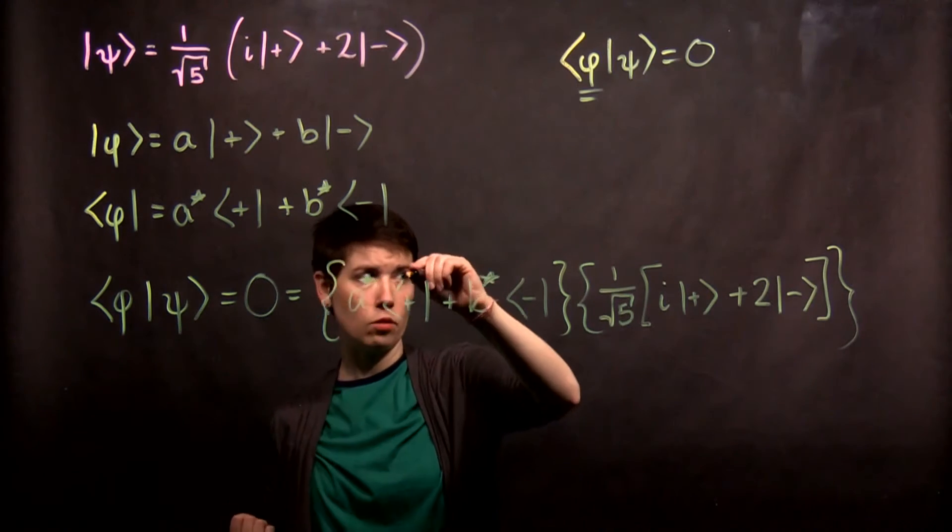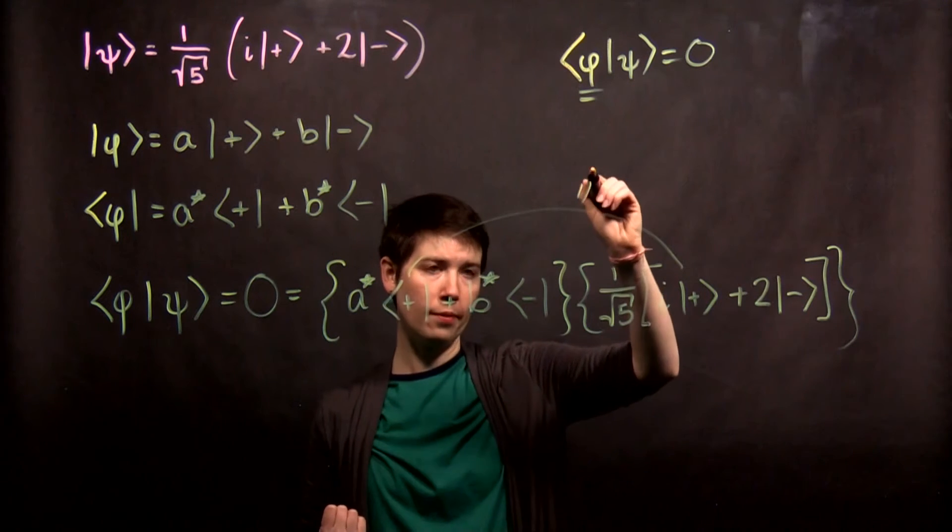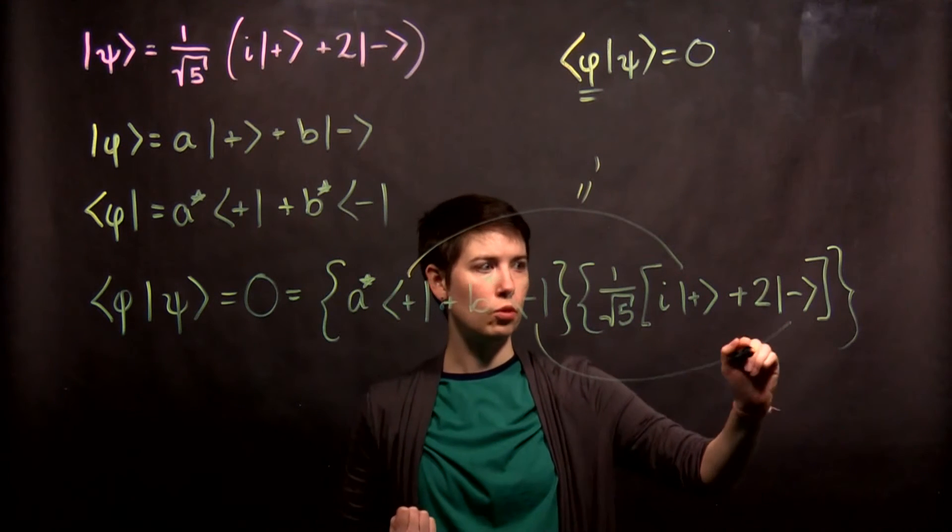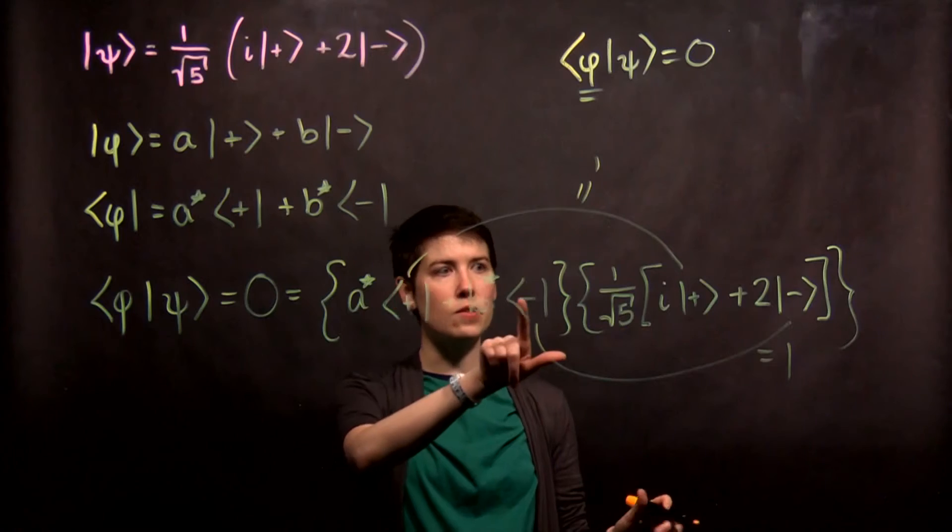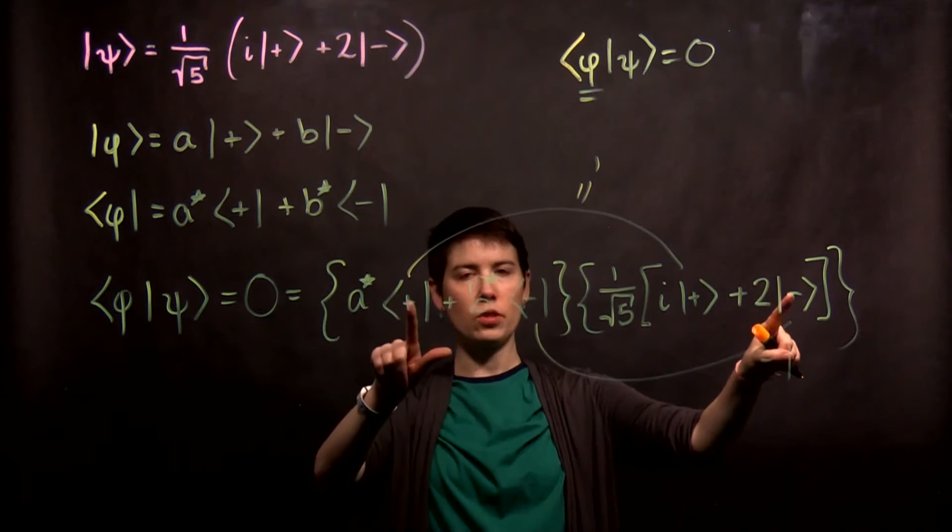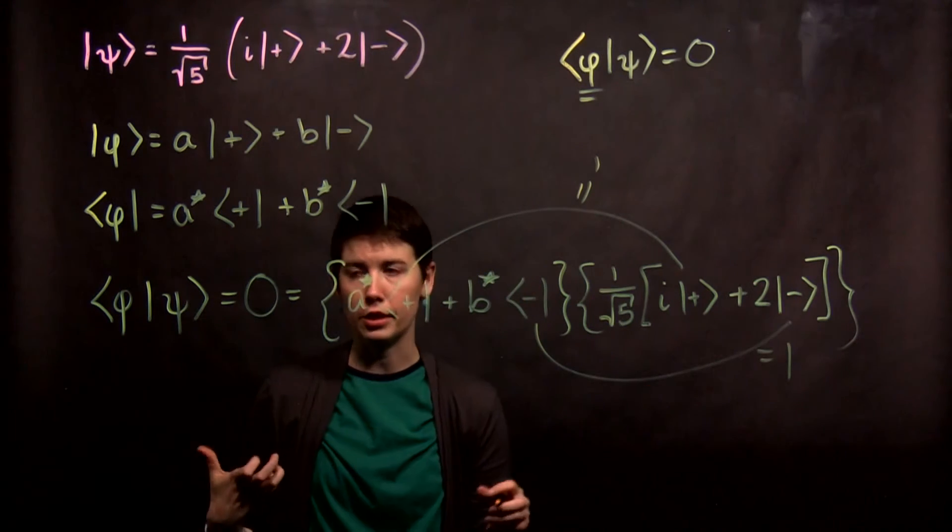As always, we're going to foil it out. So this state will give us 1, and this state will give us 1. The other states, this minus with this plus, this minus with this plus, will give us 0 and not going to contribute.